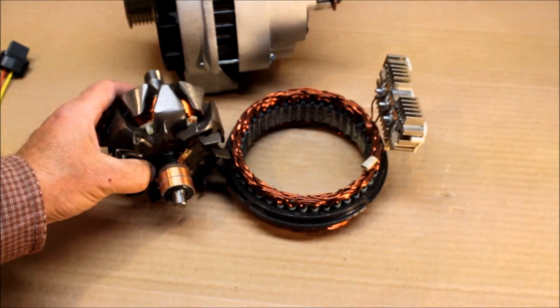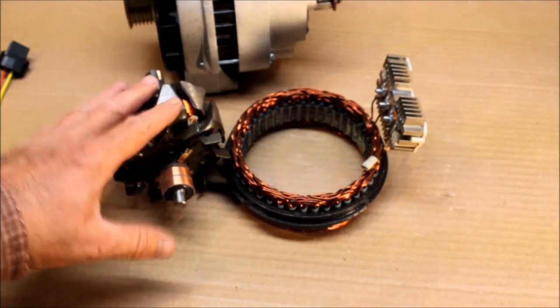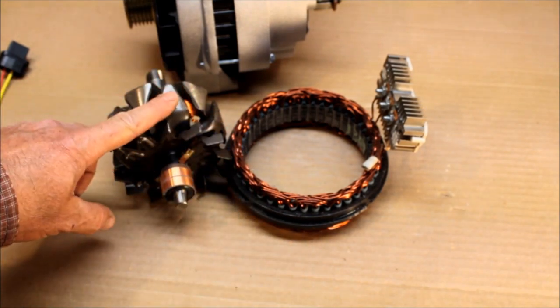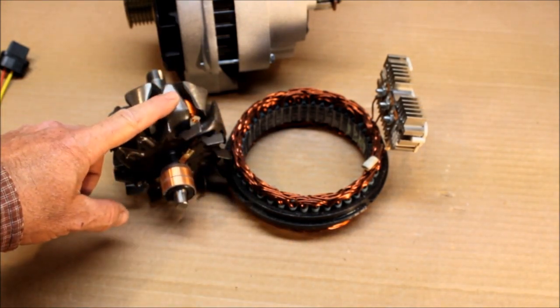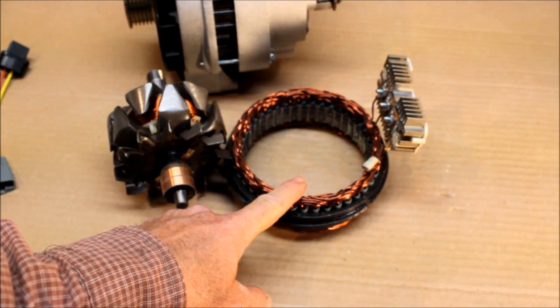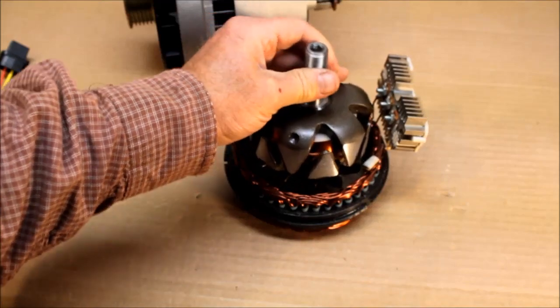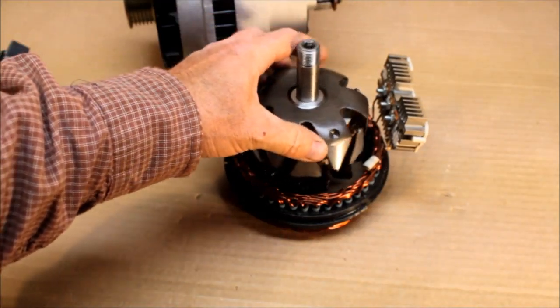Alternators are made up of two electromagnetic fields. This rotor is an electromagnetic field, and the stator is an electromagnetic field. When this rotor field spins inside of the stator field, it causes AC power to be made inside the stator.